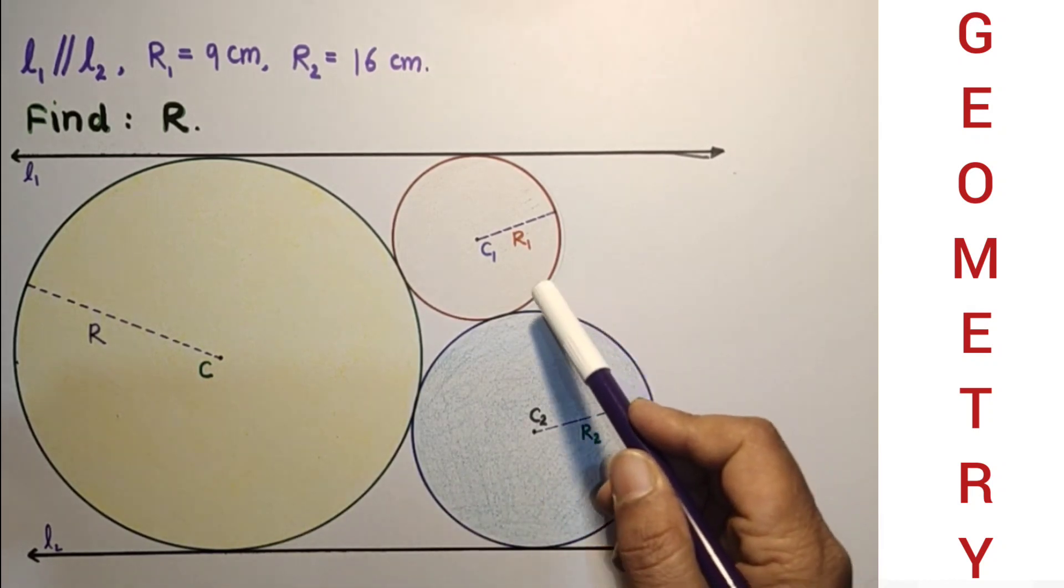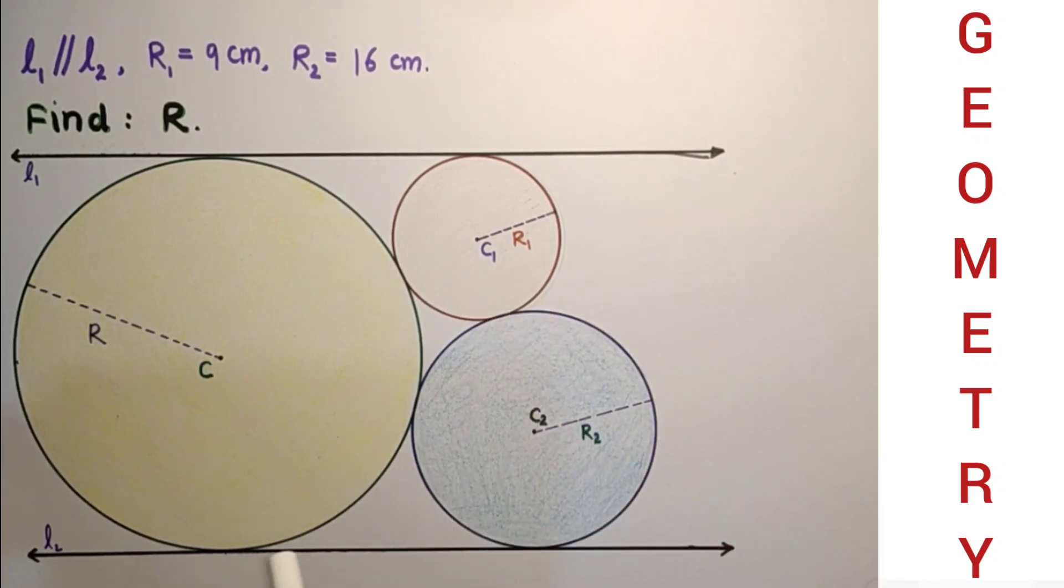We are given that this radius is 9 cm and length of this radius is 16 cm. We don't have this radius. We have to calculate this radius.